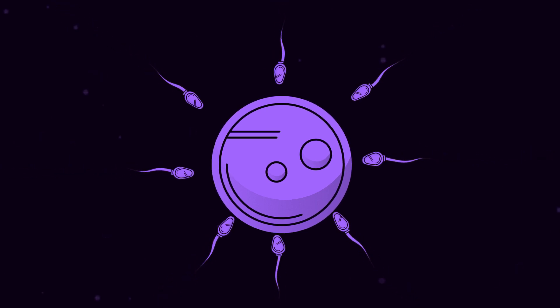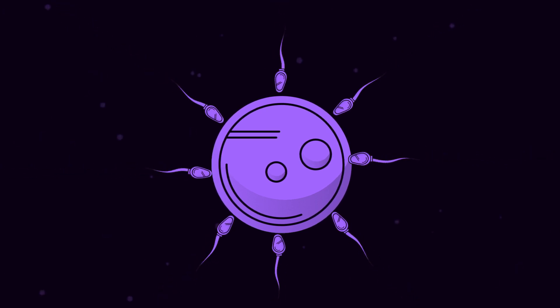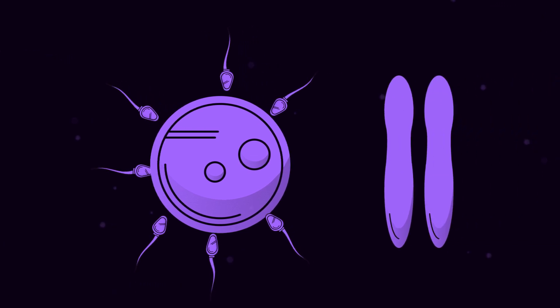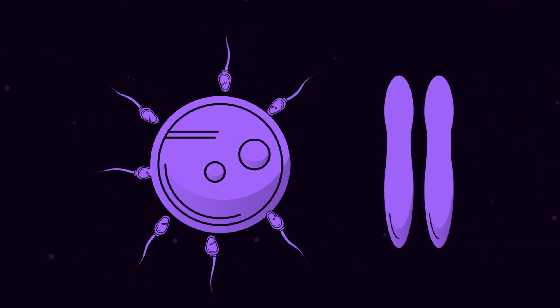When the sperm fertilises the egg, the chromosomes pair up and become diploid. So they have to start at haploid so that there is room to pair.